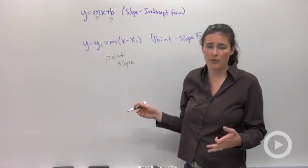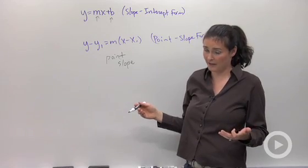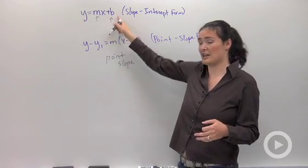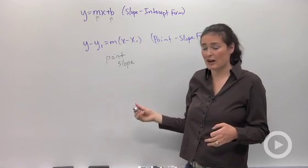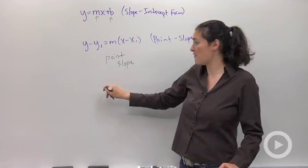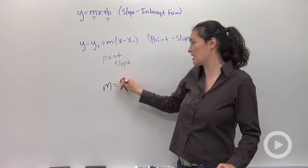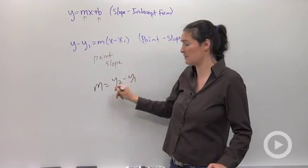So no matter how you go about writing the equation, you're going to have to find the slope and either the y-intercept or one of the other points. Keep in mind what you guys know about finding the slope. If you know two points on the line, you can use this equation to find the slope.